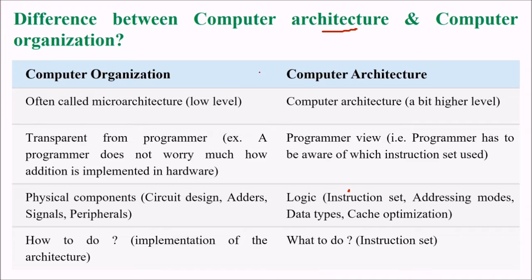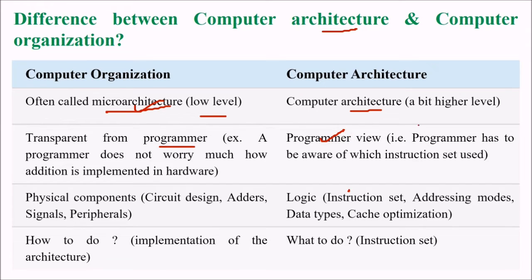Computer organization is often called low-level or micro architecture. Computer architecture is at a bit higher level. Computer organization is transparent from the programmer — that is, a programmer does not have to worry about how addition is implemented in hardware. While the programmer needs to be aware of the architecture, meaning the program has to know which instruction set is used.